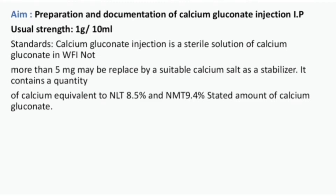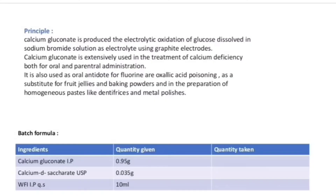AIM: Preparation and documentation of calcium gluconate injection IP. Usual strength: 1 gram per 10 ml. Standards: Calcium gluconate injection is a sterile solution of calcium gluconate in WFI, i.e. water for injection. Not more than 5 mg may be replaced by a suitable calcium salt as a stabilizer. It contains a quantity of calcium equivalent to NLT 8.5% and NMT 9.4% of the stated amount of calcium gluconate.